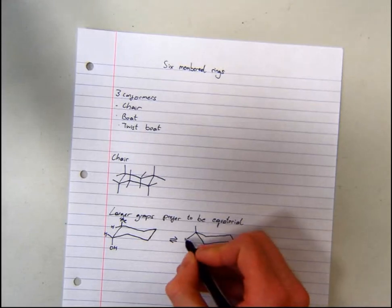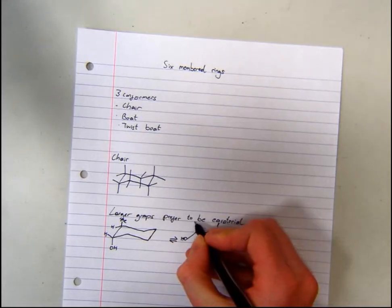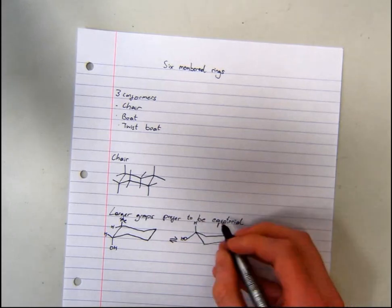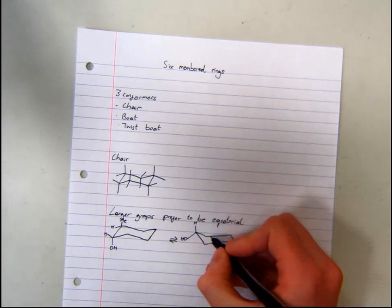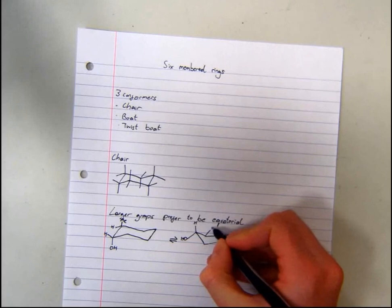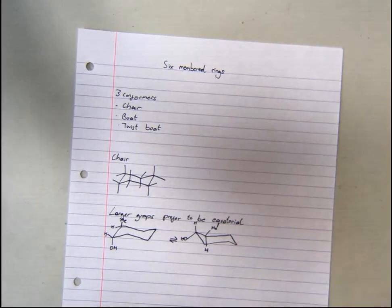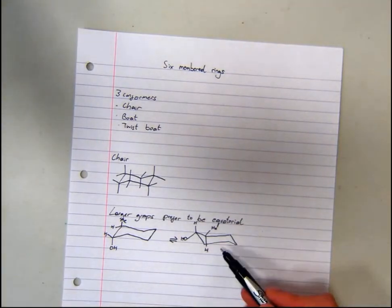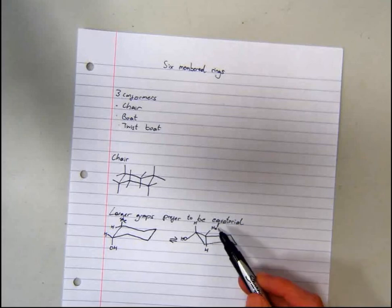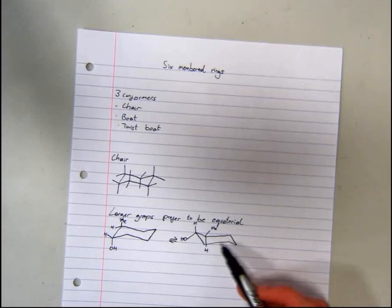The OH is now located equatorially here, with the hydrogen axial. And the methyl group is now positioned here, with the hydrogen pointing down. This arrangement is the most favourable, as both large groups are positioned equatorially.